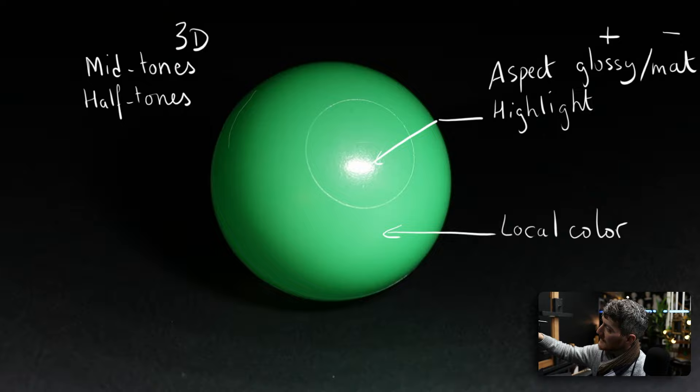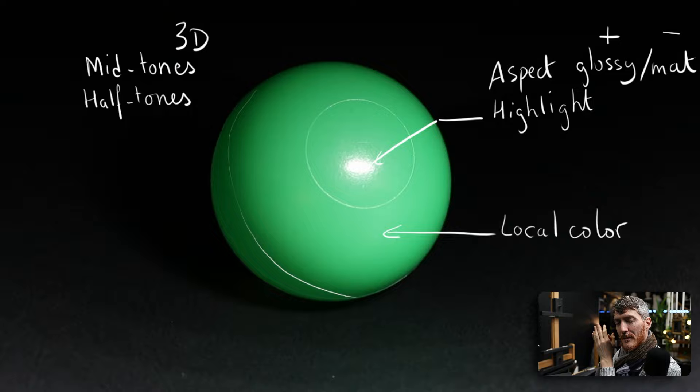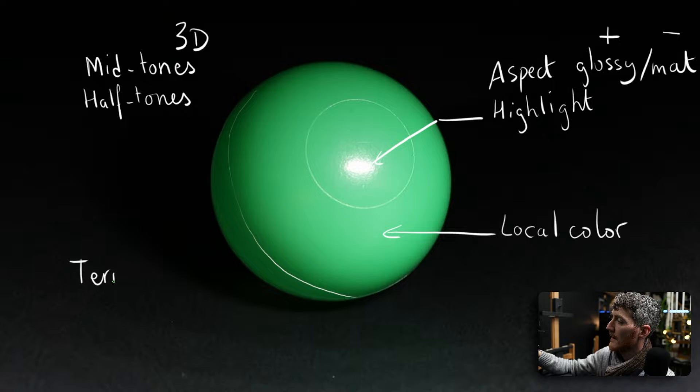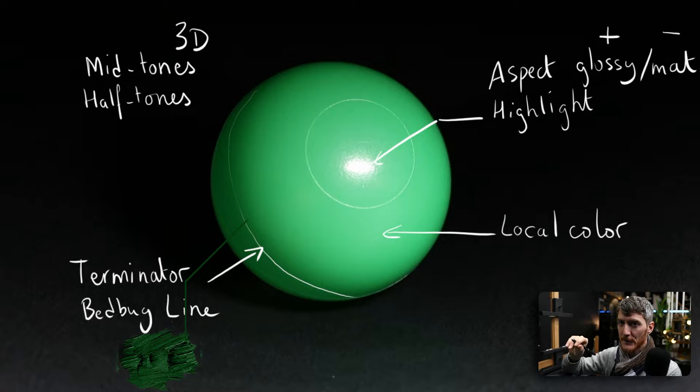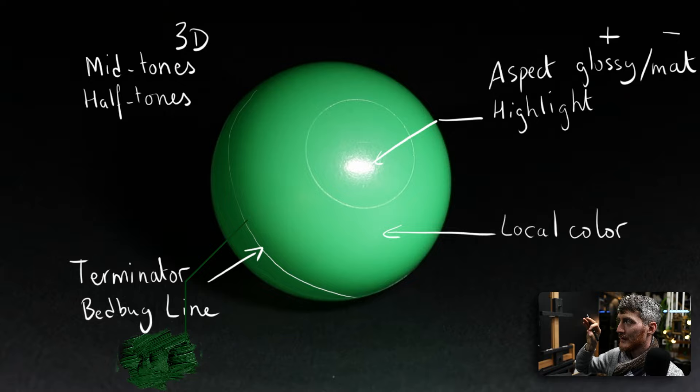Next we have the shadows, and the most important part of the shadow is this line here — the limit, the frontier between the light side and the shadow side. This is sometimes called the terminator line or the bedbug line, and it's typically the darkest type of green you would get on the entire sphere, because it receives the least light.